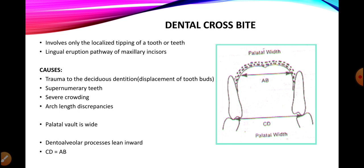In dental crossbite there is usually no skeletal discrepancy in the maxilla or mandible — it is just due to a deflective pathway, crowding, or similar issues. Causes of dental crossbite include trauma to the deciduous dentition causing displacement of tooth buds, supernumerary teeth, crowding, or arch length discrepancy causing deflection from the normal eruptive path. In dental crossbite, there is no dental compensation and no buccal flaring of the posterior teeth, and the maxilla and mandible are transversely of equal dimensions.